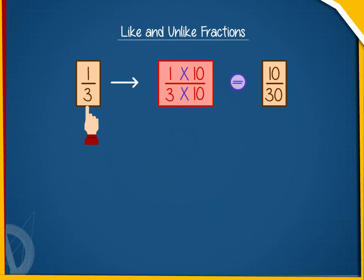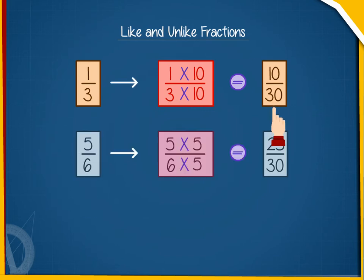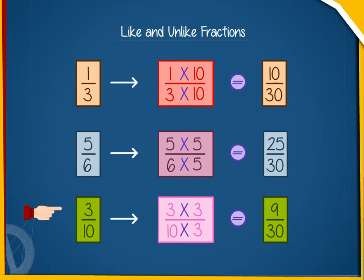1 by 3 will become 1 times 10 by 3 times 10, equal to 10 by 30. 5 by 6 will become 5 times 5 by 6 times 5, equal to 25 by 30. And 3 by 10 will become 3 times 3 by 10 times 3, equal to 9 by 30.